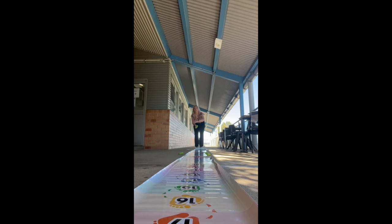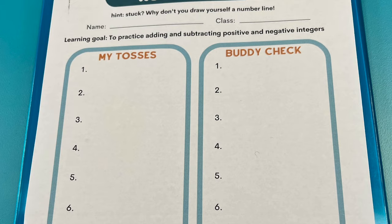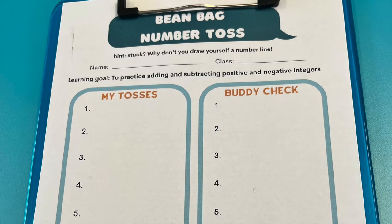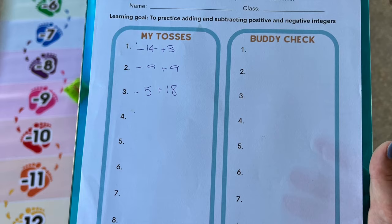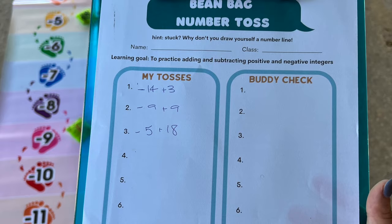They then need to use these two numbers to create a question on their worksheets. My students were working on addition and subtraction, so I had them create their first five questions using addition and the next five using subtraction, but this could very easily be changed to suit whatever your class is learning about. Once my students had their 10 questions written and completed, I got them to find a classmate or two and check their working out as well.